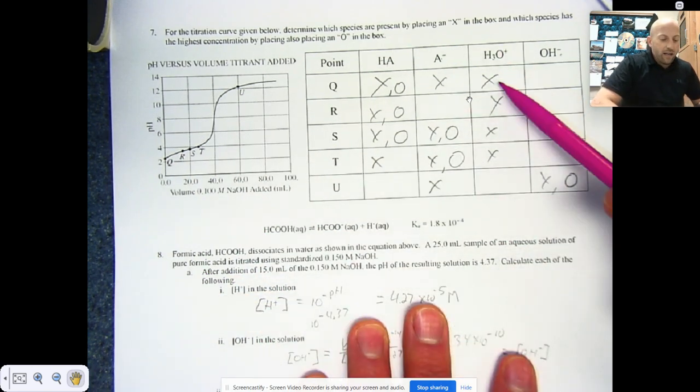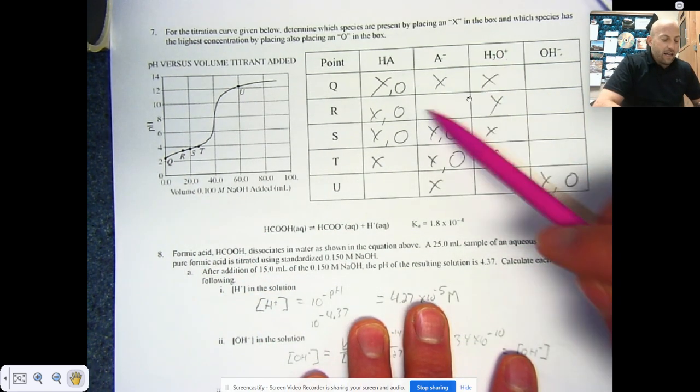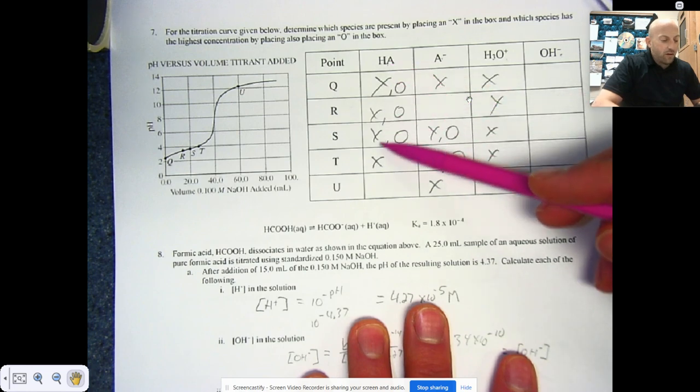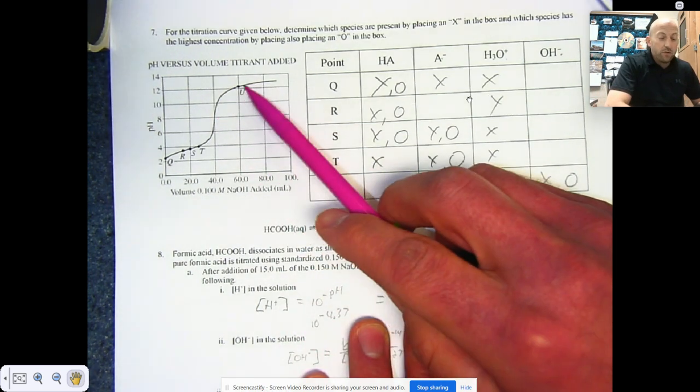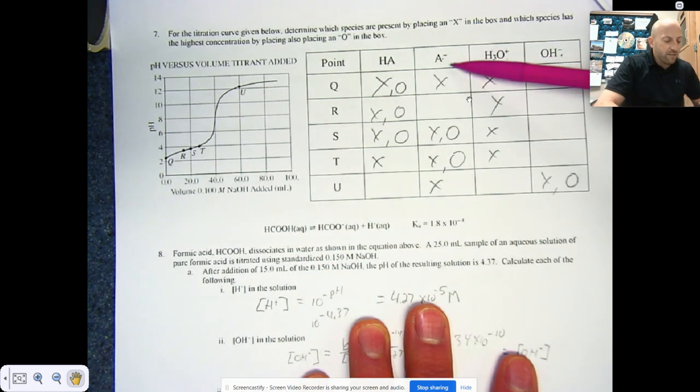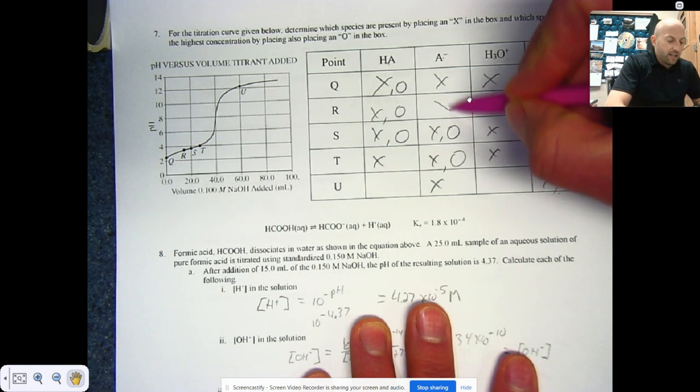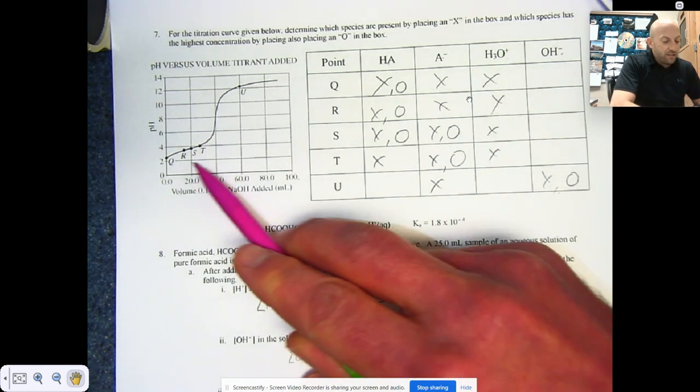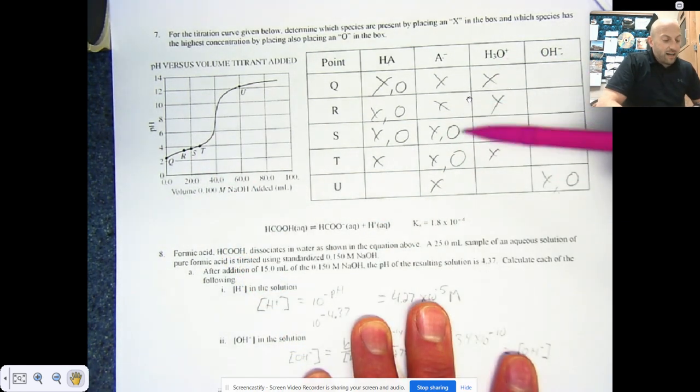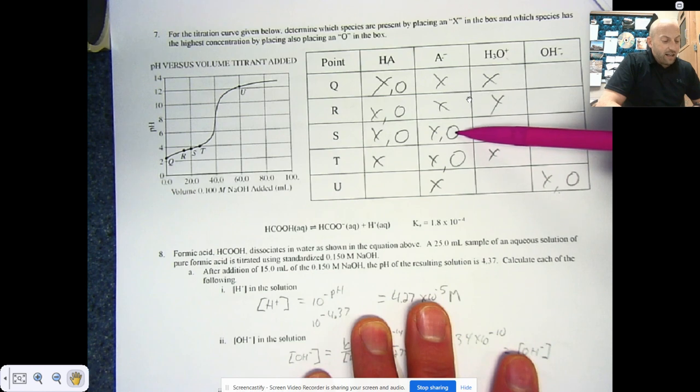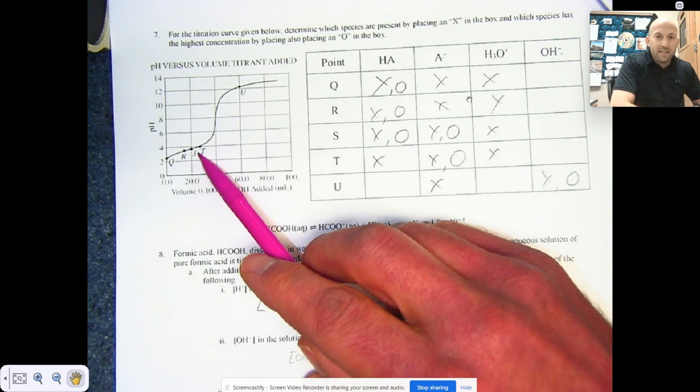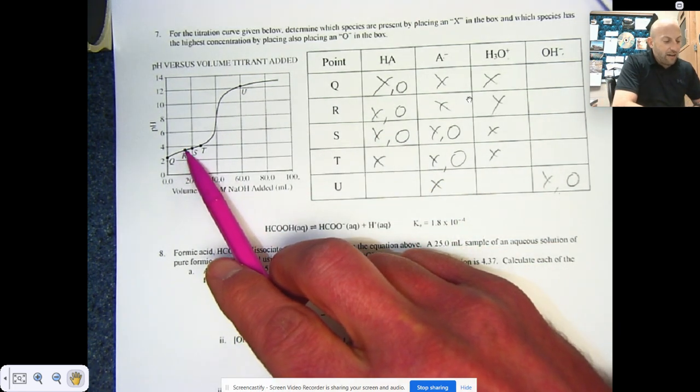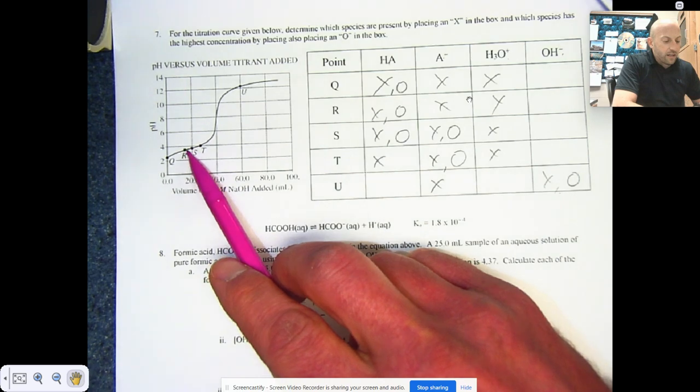What we're seeing is at point Q we have the original acid present, we have a little bit of conjugate base I guess assuming that we put it in and it goes, and we have hydronium. This original acid is present all the way up through T but it's not present at U. It's been neutralized by the time it gets over here. We start having conjugate base very early. I suppose I missed the X there, there's still conjugate base there at R, and it becomes the dominant species at S and T because we've gone past that halfway to equivalence point.